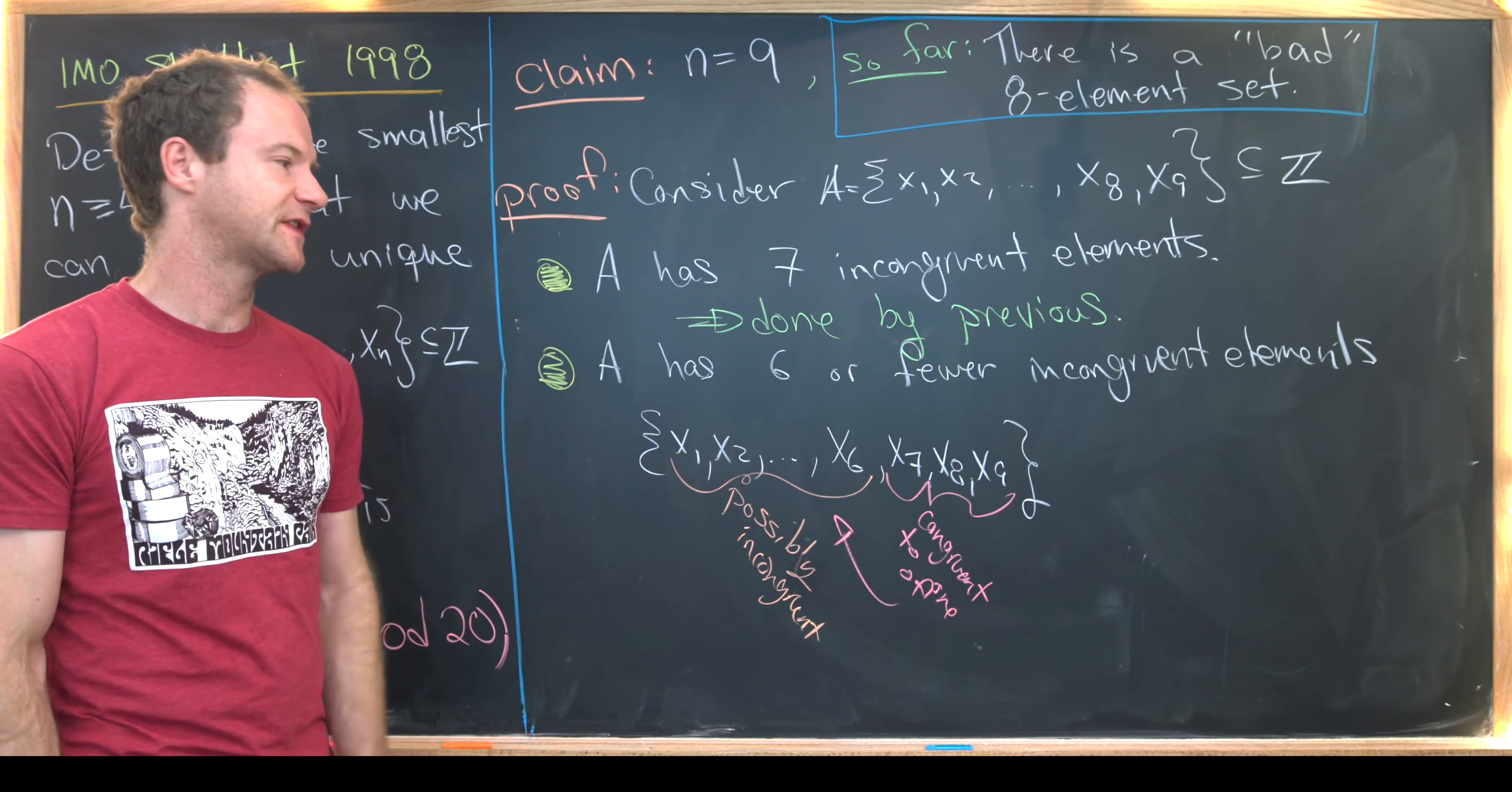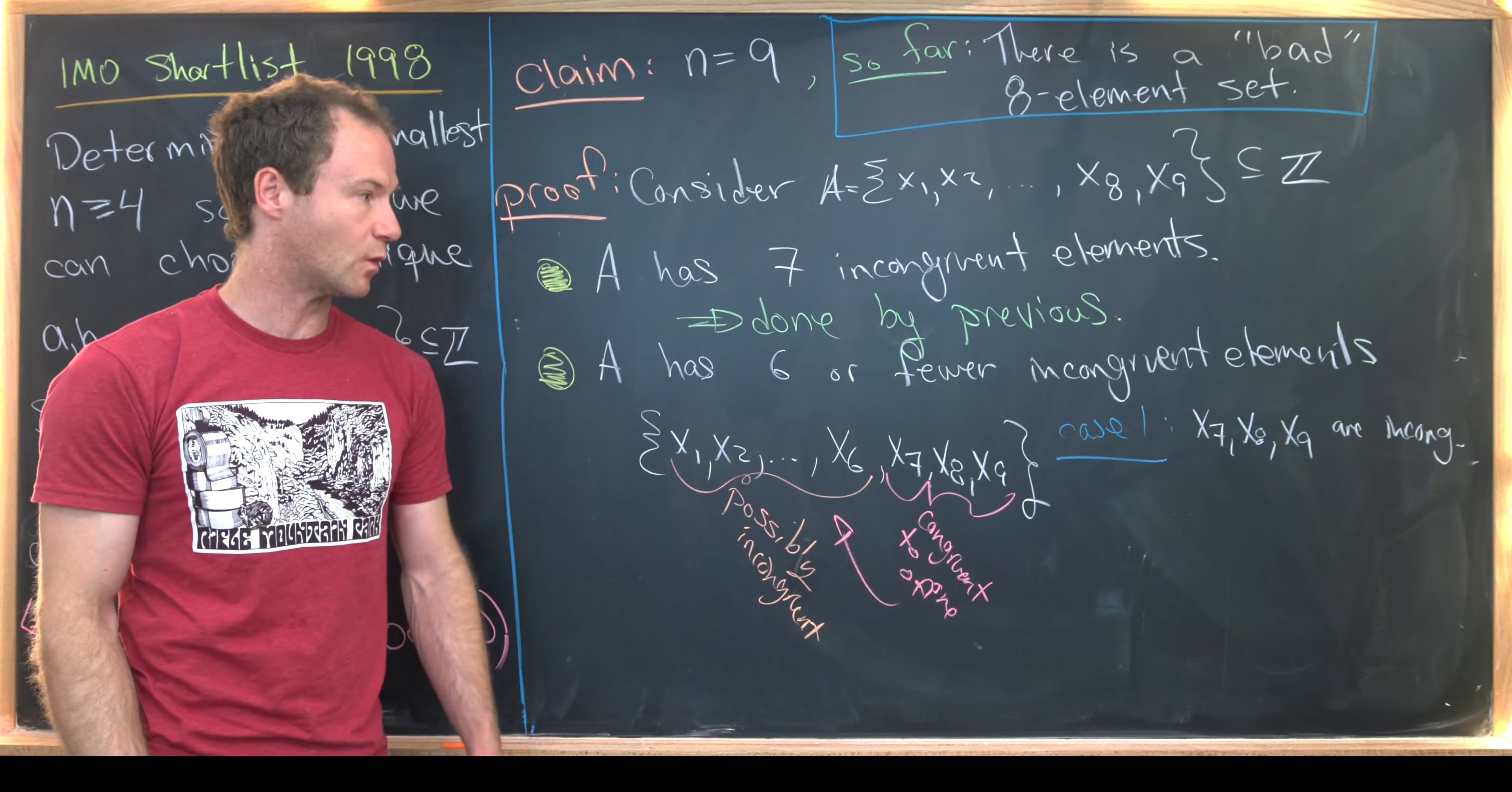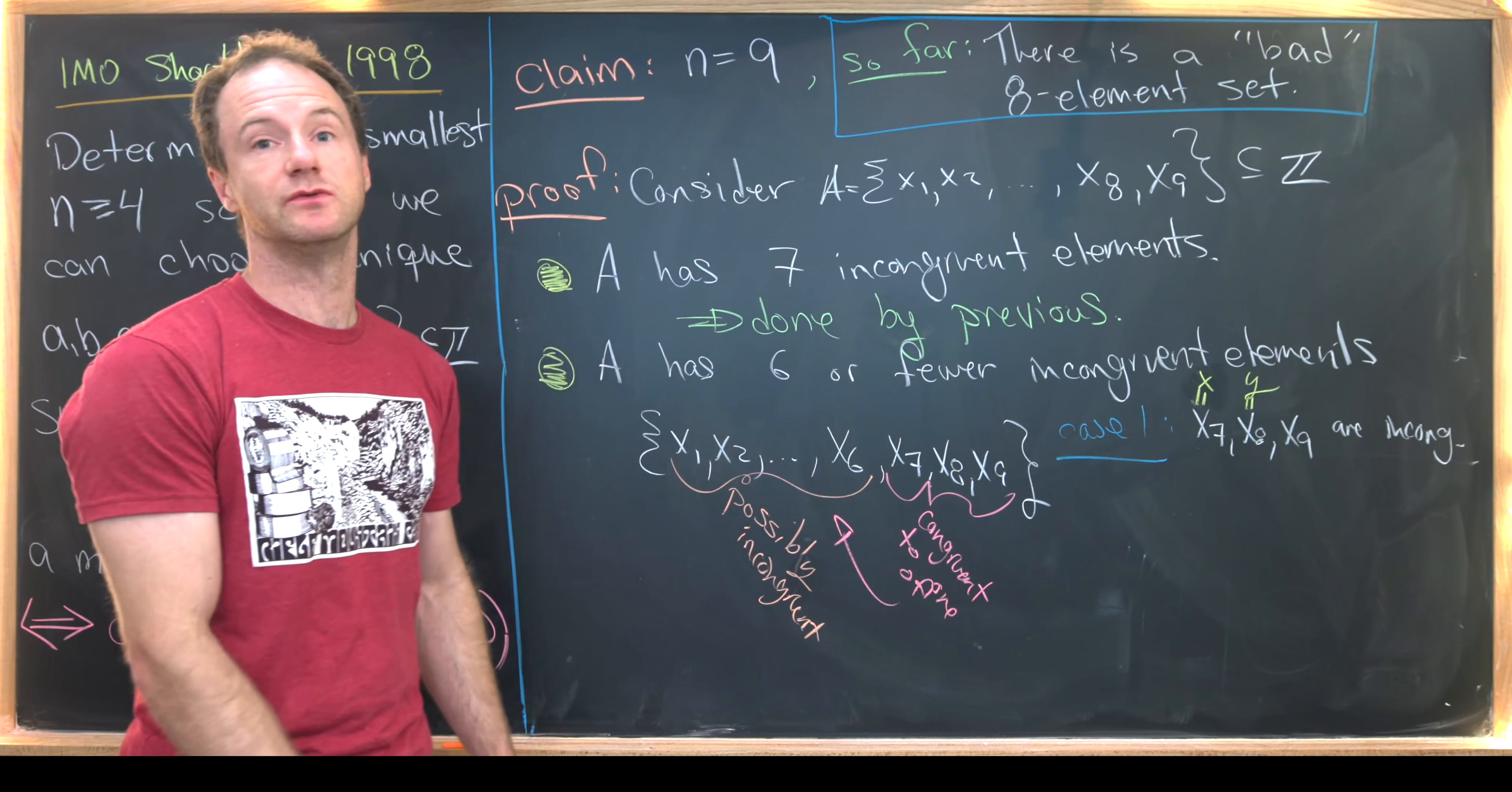Now let's break this down into two cases. So let's say case number one is x7, x8, and x9 are all incongruent. Okay, so that's most definitely one possibility. Then in that case, I'll just introduce some new notation. I'll call x7, y. I'll call x7, x, x8, y.